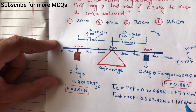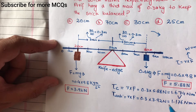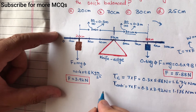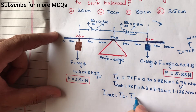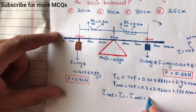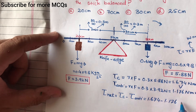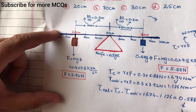Clockwise torque = 1.674 Nm اور anti-clockwise torque = 1.176 Nm — clockwise torque زیادہ ہے۔ تو یہ rod clockwise rotate کرے گا۔ Net torque = clockwise torque − anti-clockwise torque = 1.674 − 1.176 = 0.588 Newton meter۔ یہ net clockwise torque ہے۔